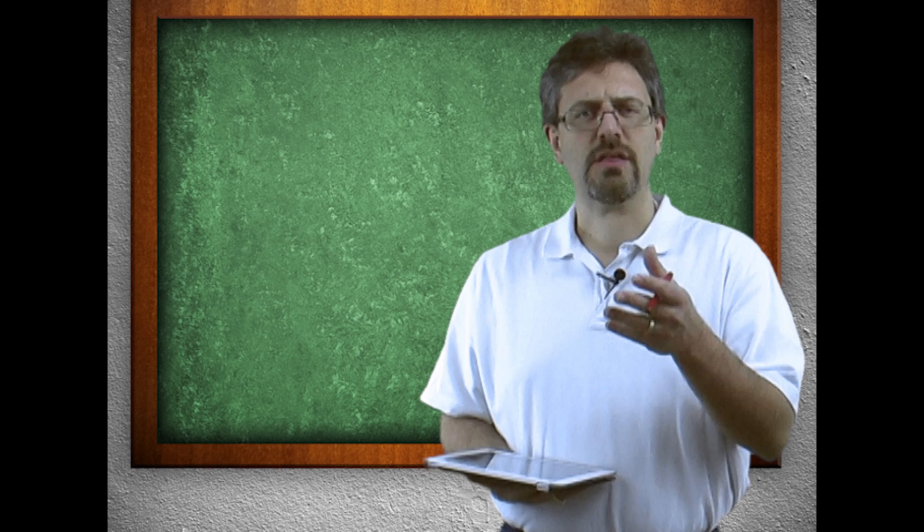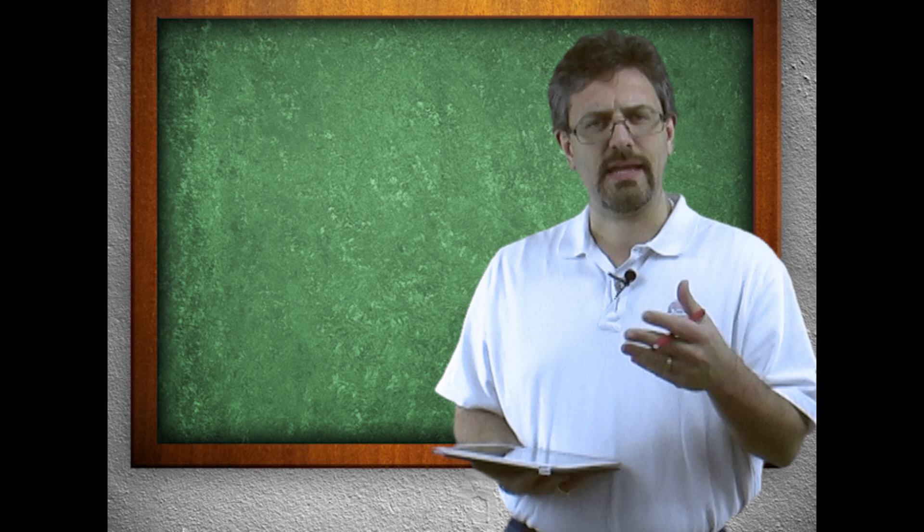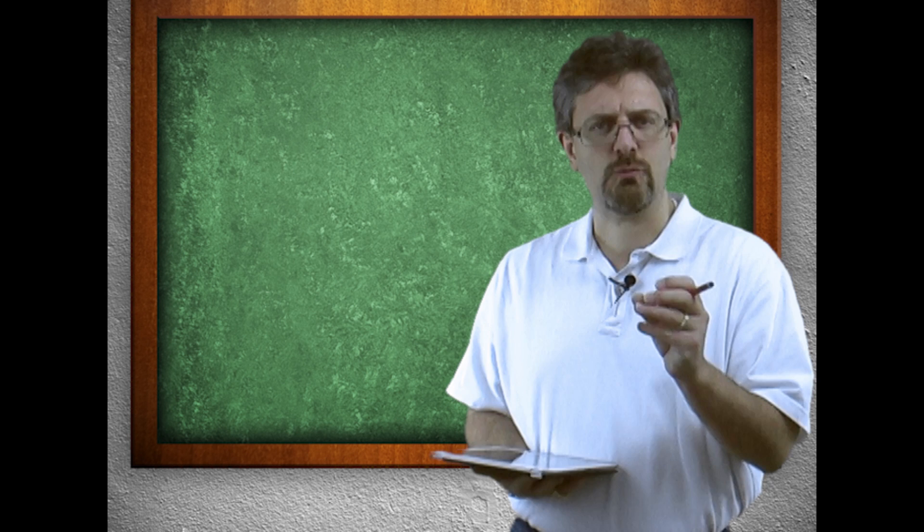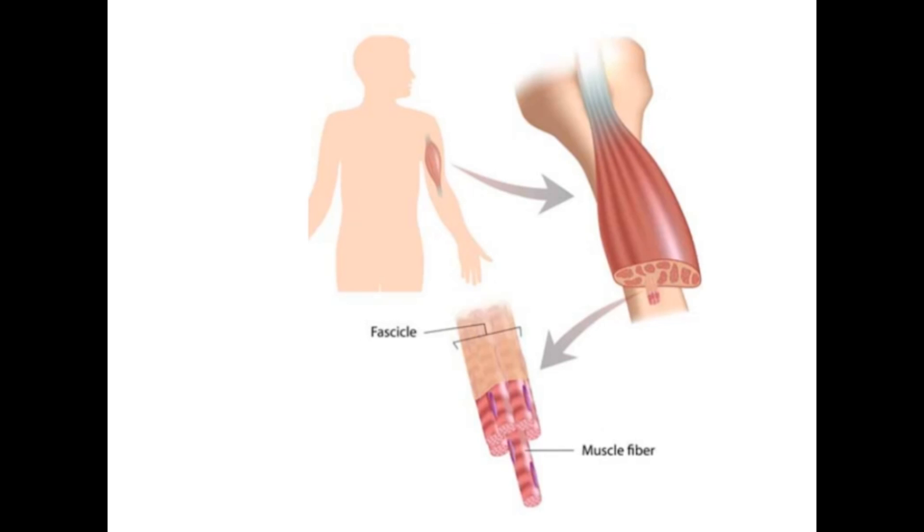Each thick filament is going to be surrounded by six of the thin filaments. We are going to talk about the sliding filament theory, but just for now realize that the muscles contract by the interactions between the thick filaments and these thin filaments. When muscles contract, the actin and myosin slide past each other.